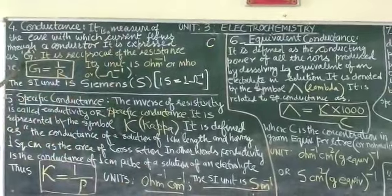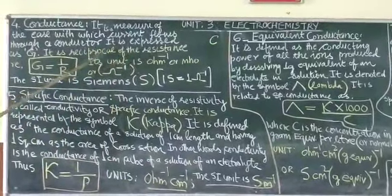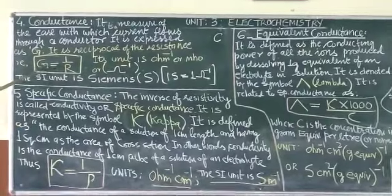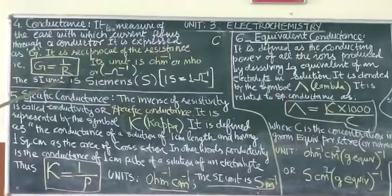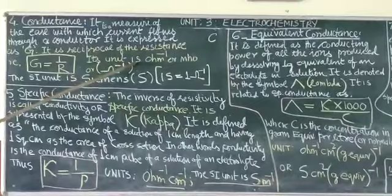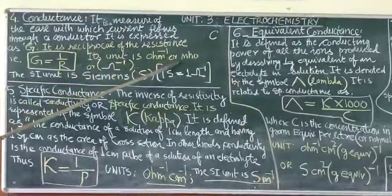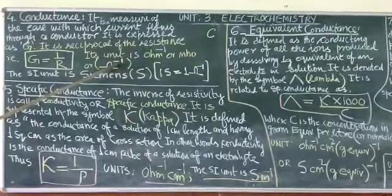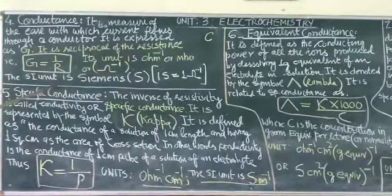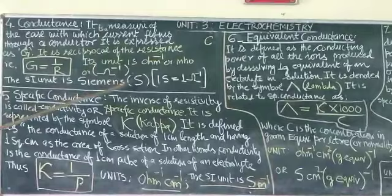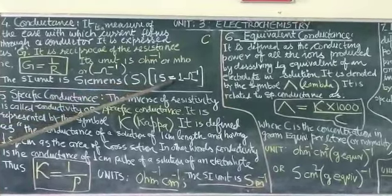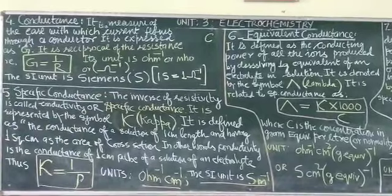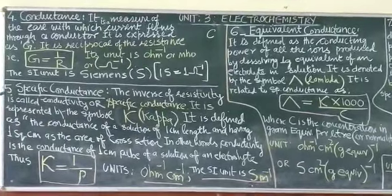G is expressed as the reciprocal of the resistance, that is G equals one upon R. Its unit is ohm inverse, or I can express it also like this in the form of symbol. The SI unit is siemens, capital S. One siemens is equal to one ohm inverse.